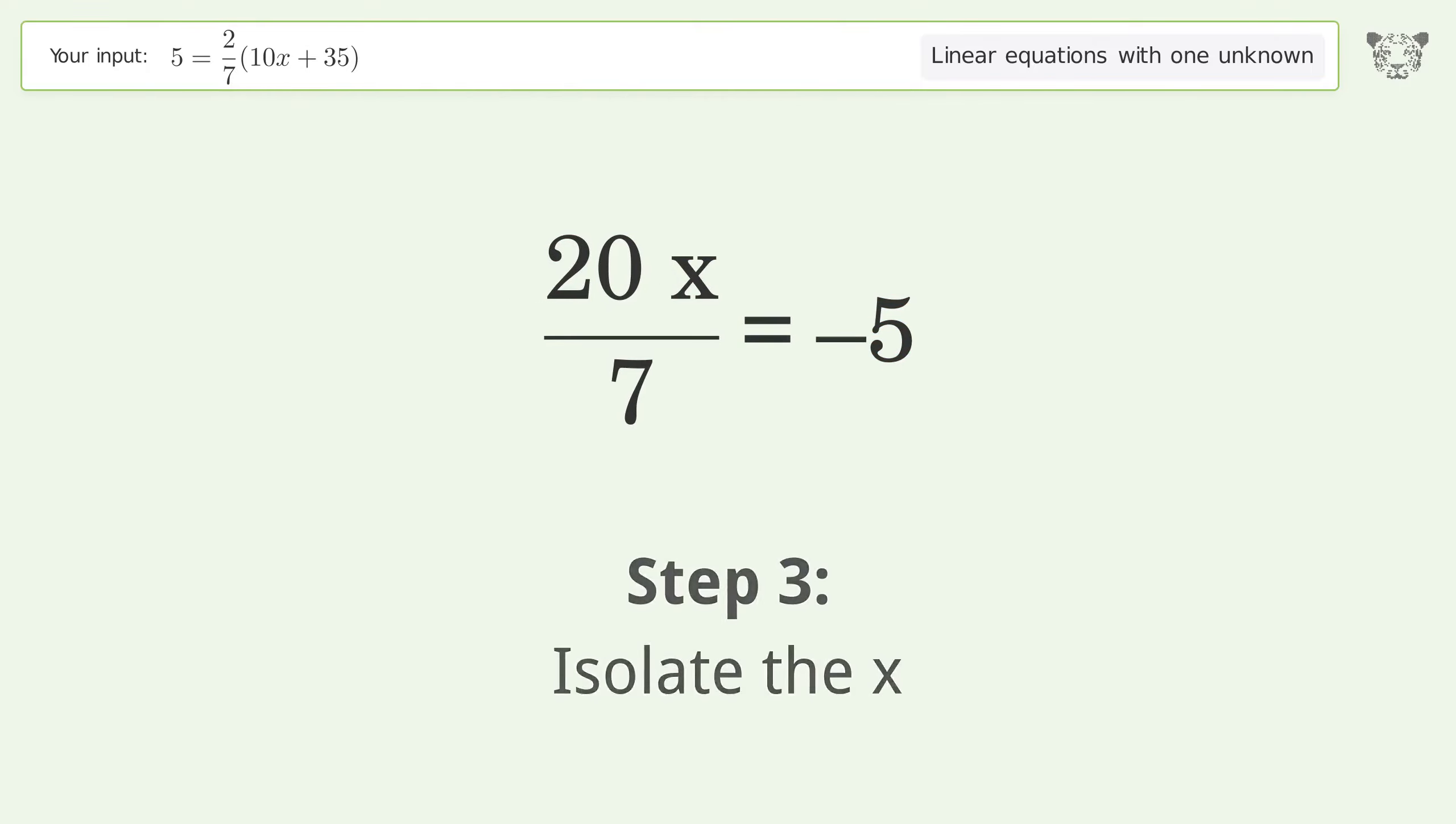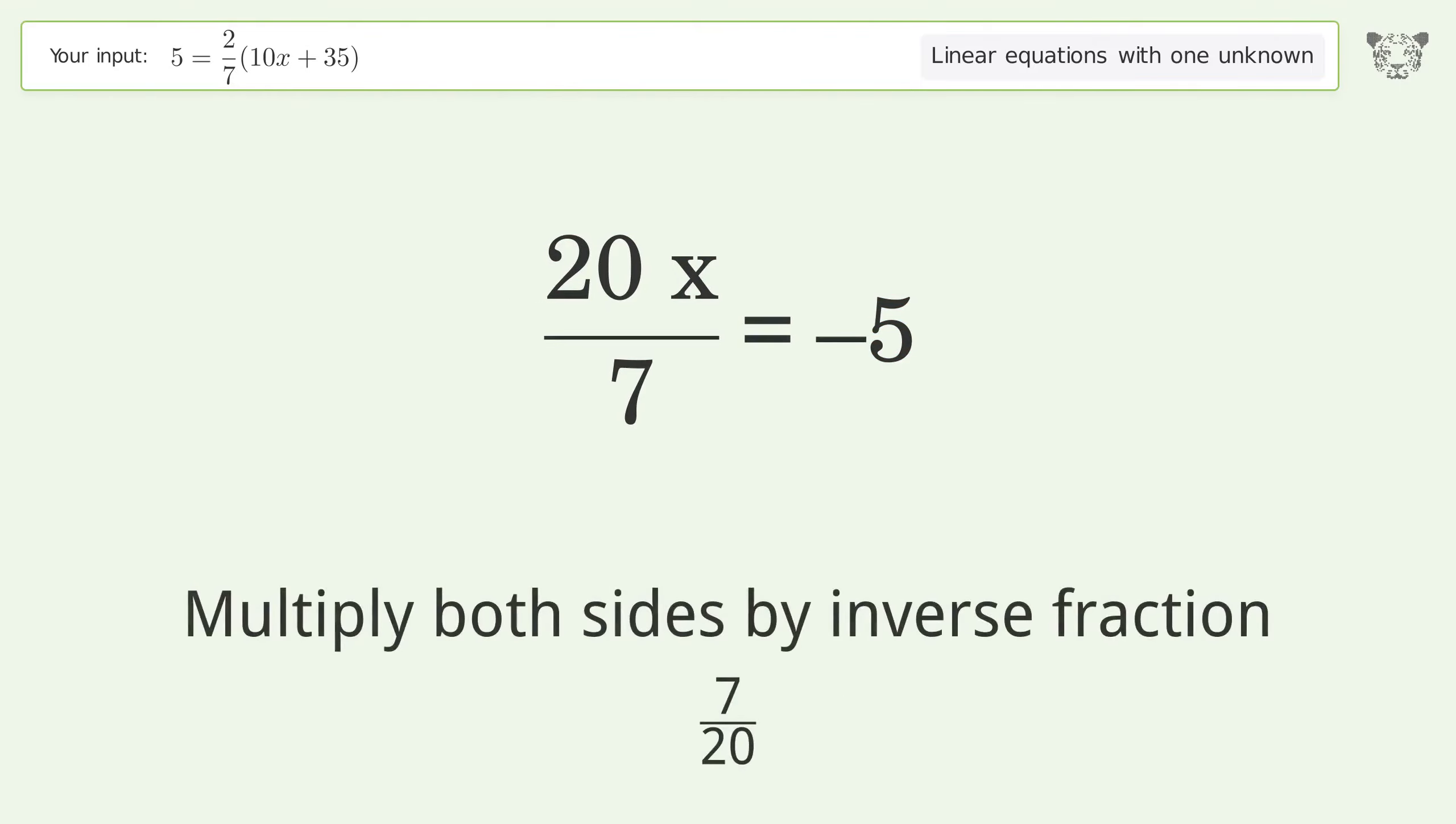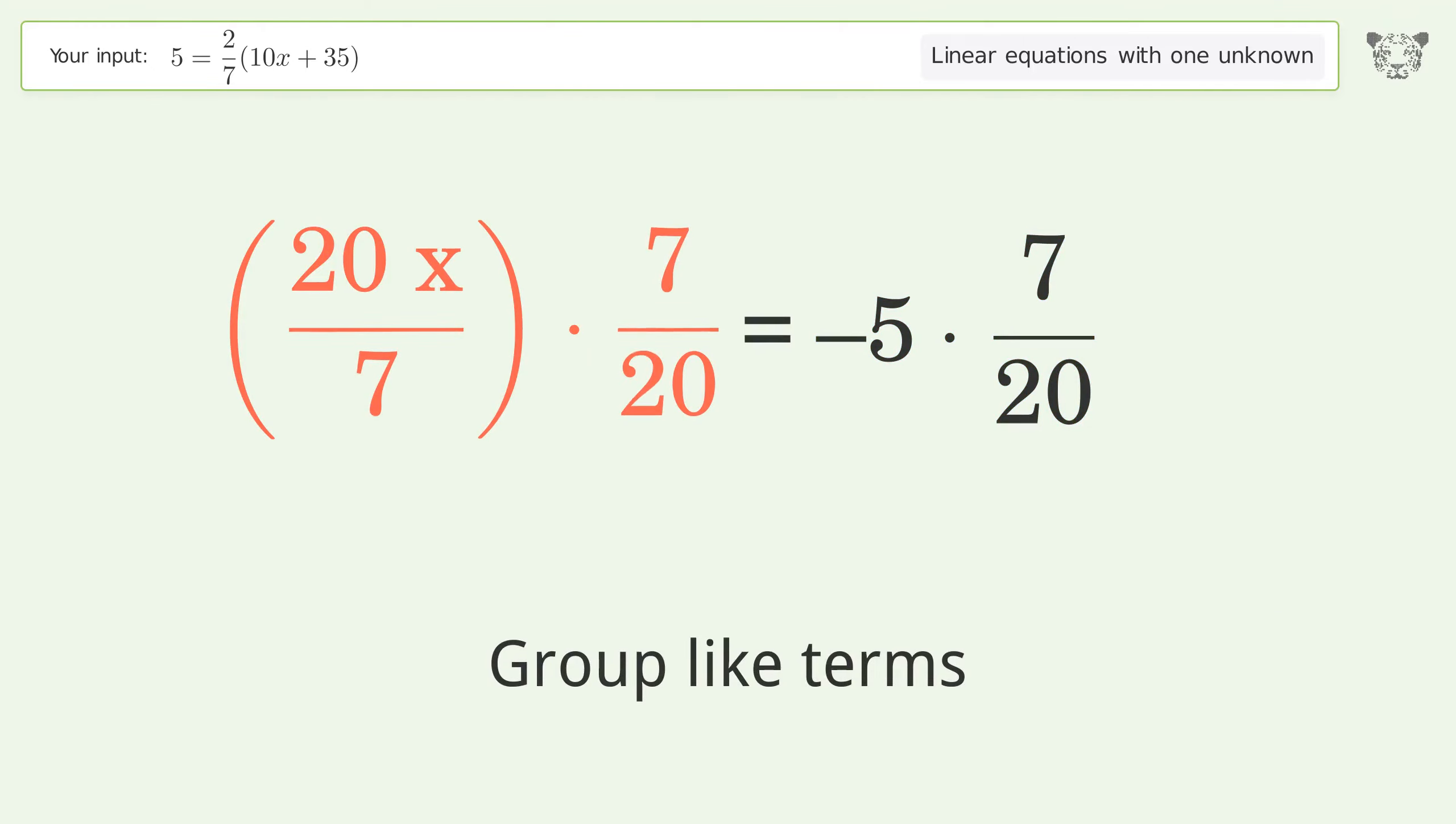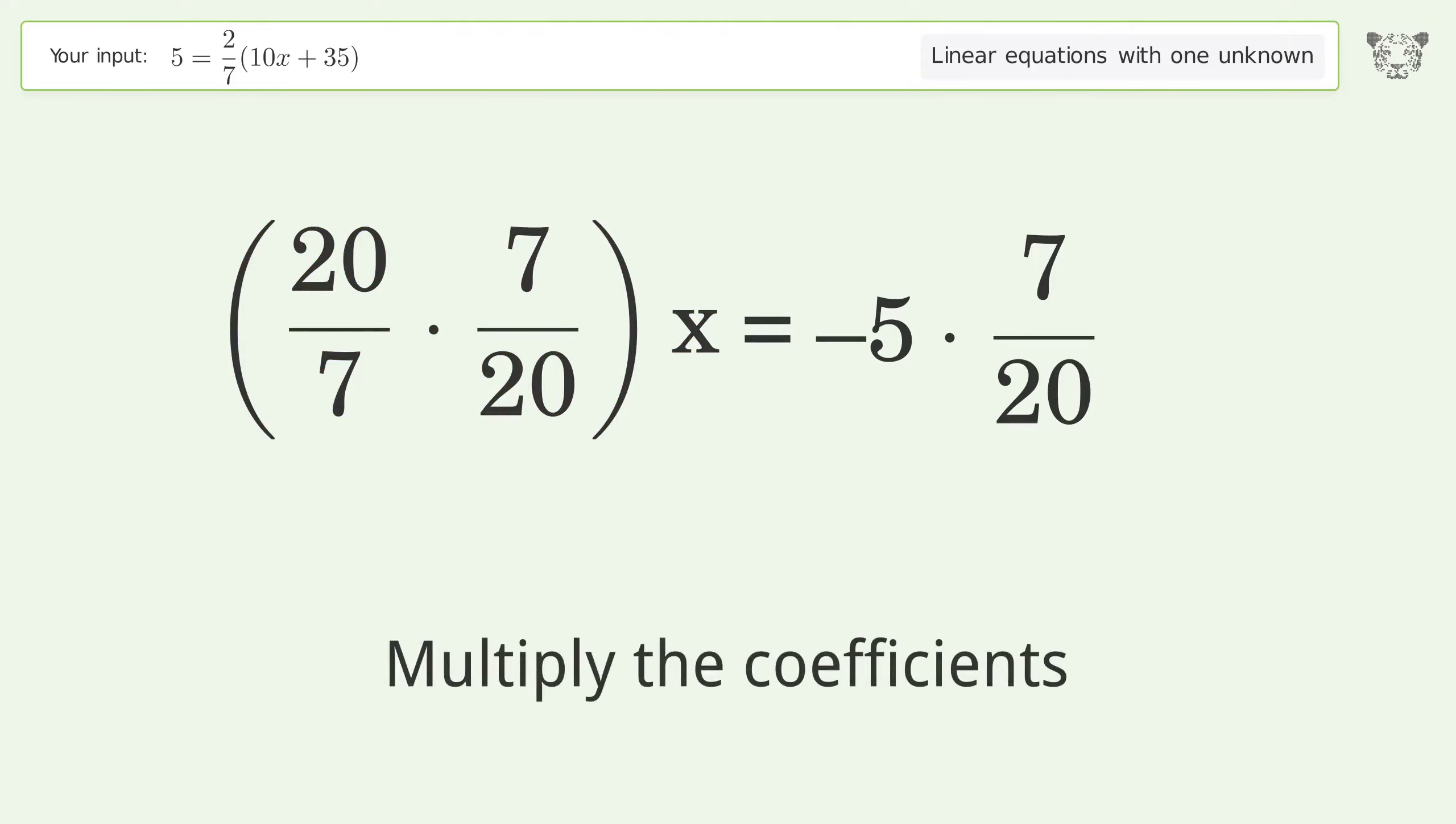Isolate the x. Multiply both sides by inverse fraction 7 over 20. Group like terms. Multiply the coefficients.